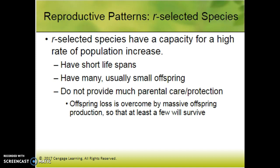This is probably new material: r-selected species and K-selected species — sort of life strategies. r-selected species basically, picture Finding Nemo — they're going to have a ton of babies and hope that one survives. The strategy is not to invest a ton of parental care and energy into caring for millions of babies, but some are going to survive. That's the life strategy of an r-selected species.